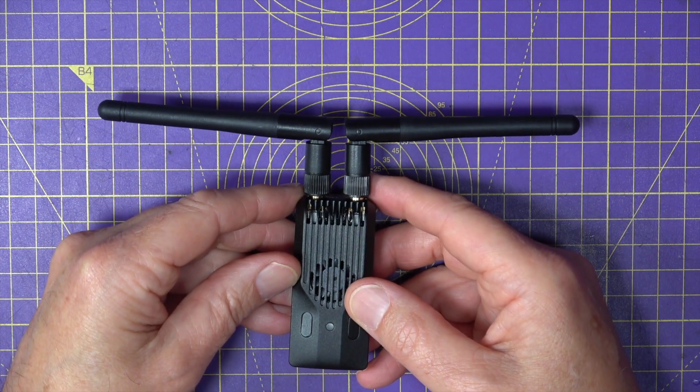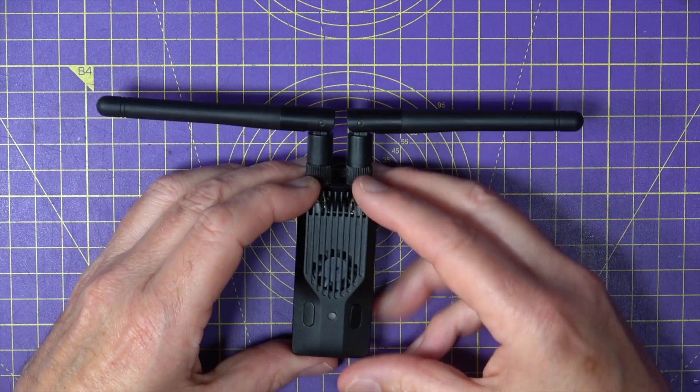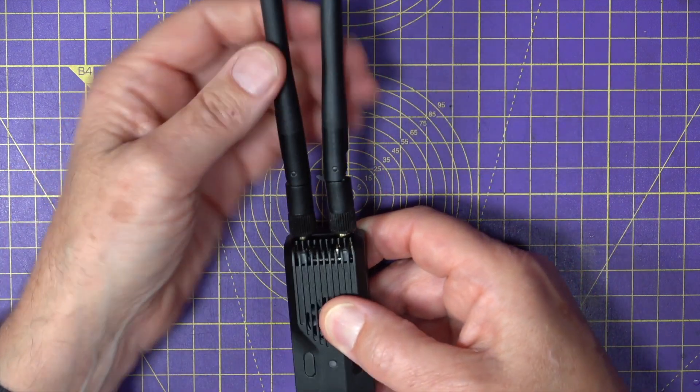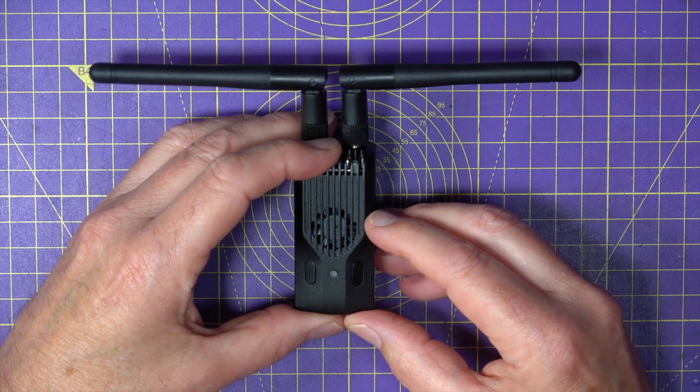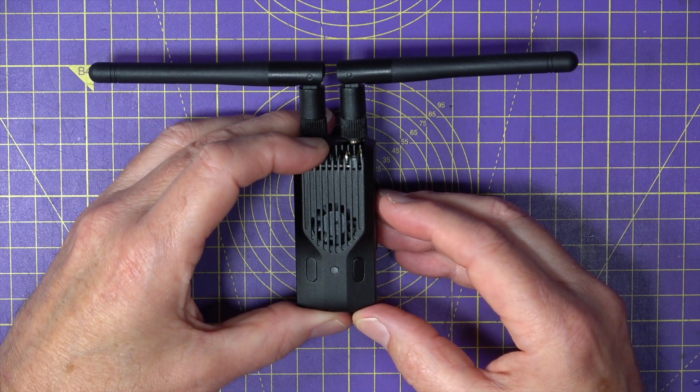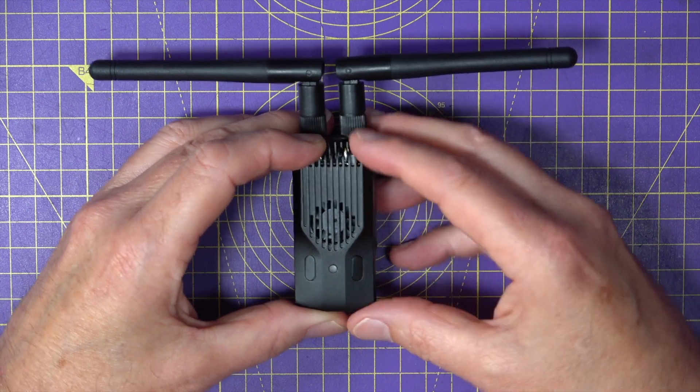And this weighs 44 grams or 56 grams with the antennas. So it's not too heavy on the back of your transmitter. You get a couple of these monopole antennas. And this unit is 2.4 GHz. And the packet rate on here can be adjusted between 50 Hz right up to F1000 and it also supports that pack.